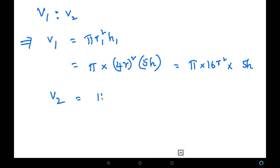Next, volume 2 pi R2 squared H2, which is nothing but pi into R2 squared value, that is 5R whole squared into H, that is 6H, which is equal to pi into 25 R squared into 6H. So we have got the volume 1 and volume 2 values.